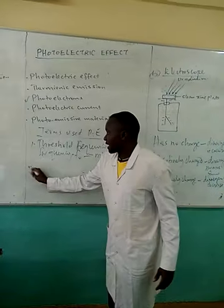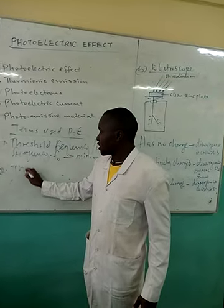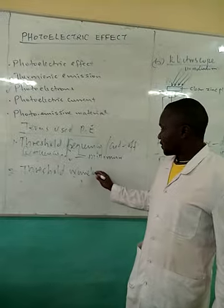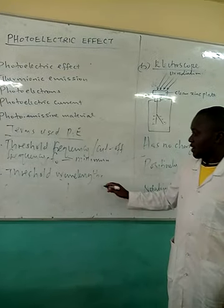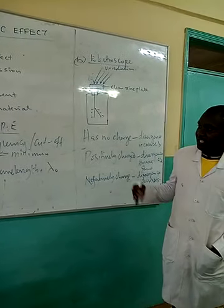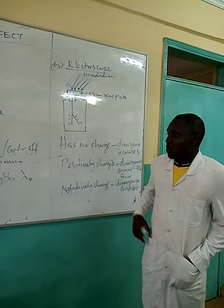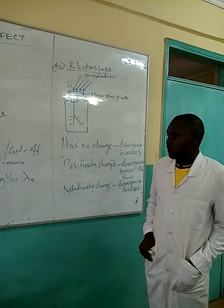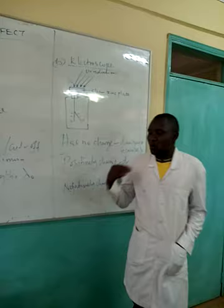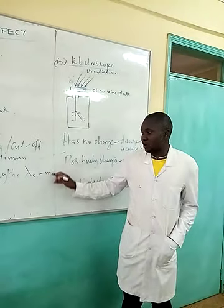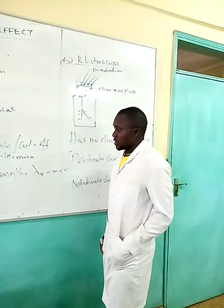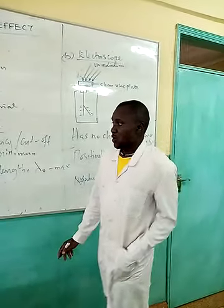We have another term called threshold wavelength, symbol λ₀. Threshold wavelength is the maximum wavelength beyond which no photoelectric effect occurs. We use the word maximum here — maximum wavelength beyond which no photoelectric emission occurs.